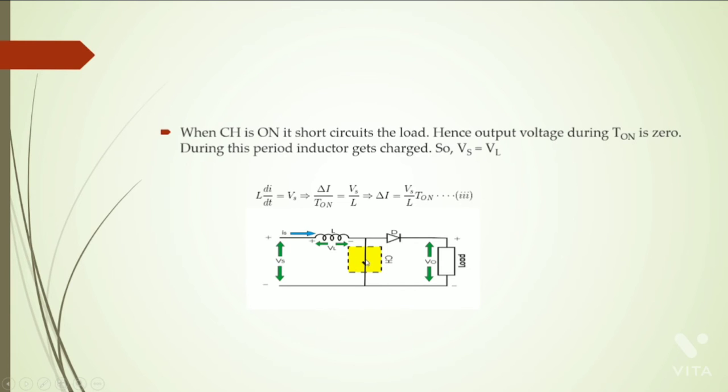Hence, the output voltage during T_on is zero. During this period, inductor gets charged. So Vs equals VL, which means Vs equals L times di by dt.